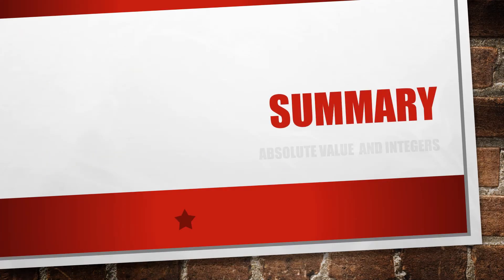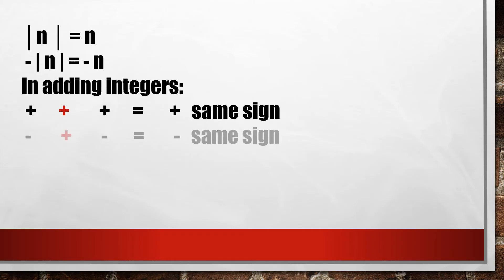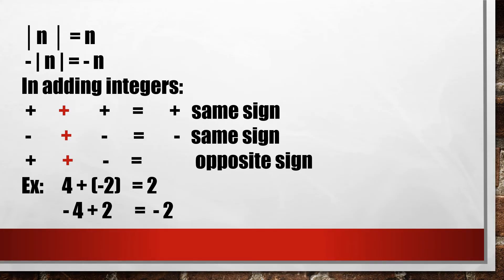Summary for absolute value and integers: The absolute value of n is n — just take the number inside the symbol. Negative the absolute value of n is equal to negative n. In adding integers: positive plus positive is always positive; negative plus negative is always negative. For positive plus negative, subtract the numbers and copy the sign of the number with greater absolute value. For example, 4 + (−2) = 2 since 4 is greater, answer is positive. For −4 + 2, 4 is greater so copy negative sign: answer is negative 2.